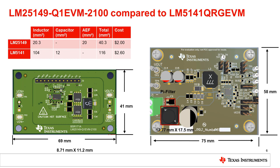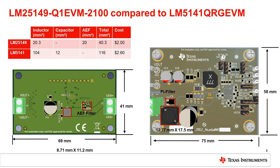Here's one more example comparing AEF to passive only. On the left we have the LM25149 evaluation board — this is the top view and the filter is on the back. On the right we have the older generation LM5141 evaluation board with a passive-only filter. Both achieve similar low frequency EMI performance. Again we see that the total AEF filter size, even including the AEF compensation network, is significantly smaller and less expensive than what we'd see on a passive-only filter with comparable performance.